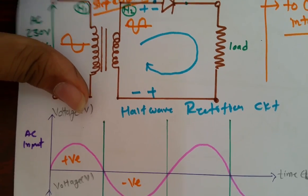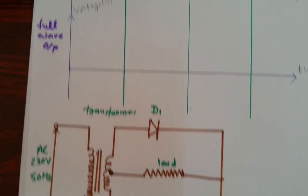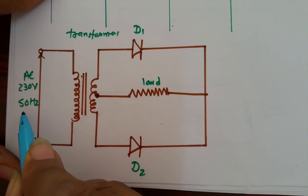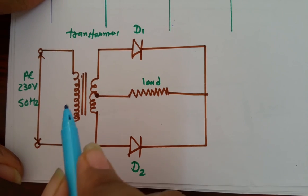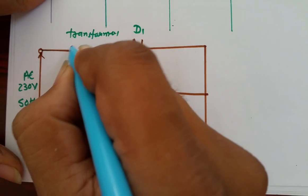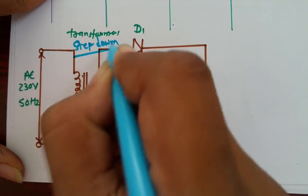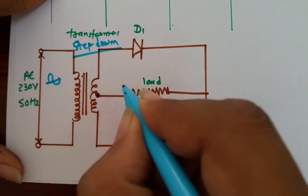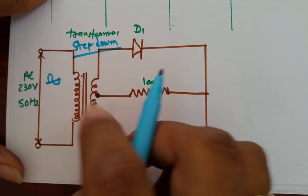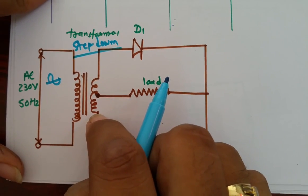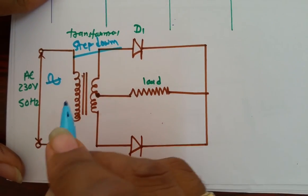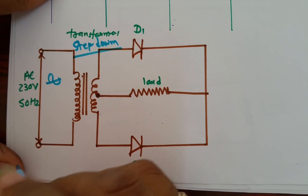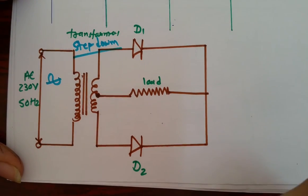Now we will see the full wave rectifier. In this full wave rectifier circuit, we give 230 V AC at 50 Hz, and again we use a step-down transformer which converts AC to AC only, but with less voltage at the output side because the primary has more windings with respect to the secondary. This is a center-tap transformer, and we will again analyze it with respect to positive and negative half cycles.